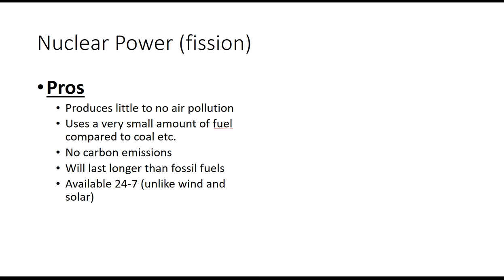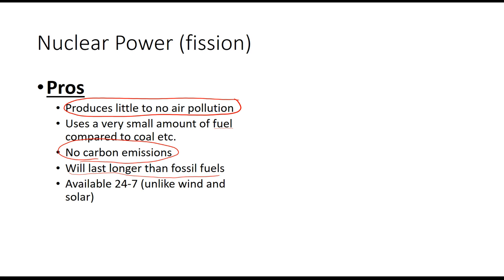Because we're not burning anything in fission, we're not releasing pollutants into the air — so there's little to no air pollution associated with nuclear power and no carbon emissions, which is really important for atmospheric stability. Nuclear can also use various types of fuel such as thorium, so it's likely to last much longer than fossil fuels. Like coal and natural gas, it's available 24/7, unlike variable sources like wind and solar.